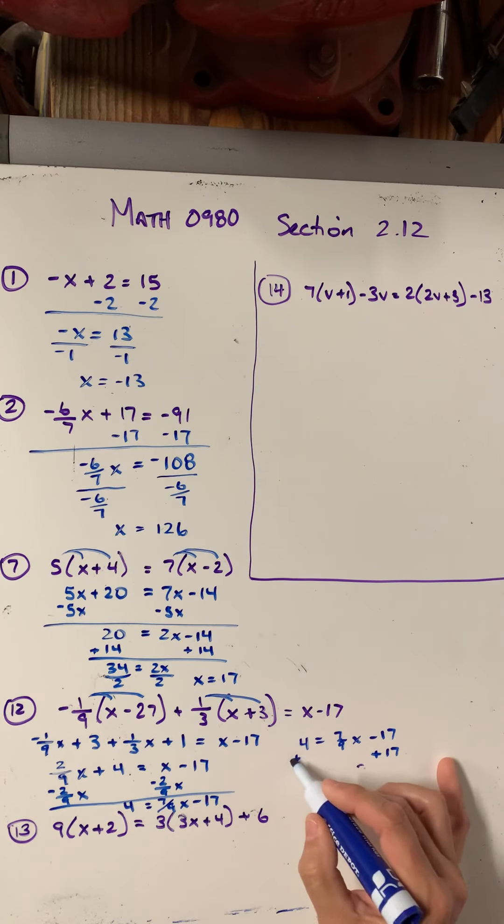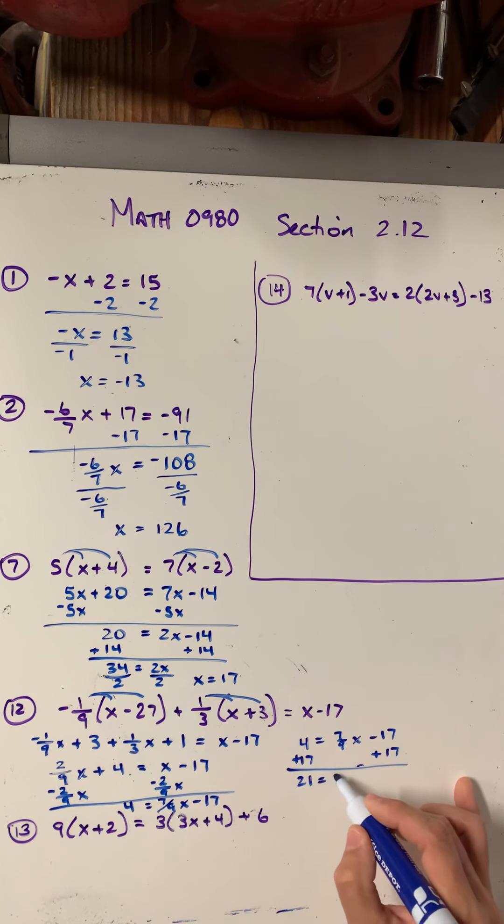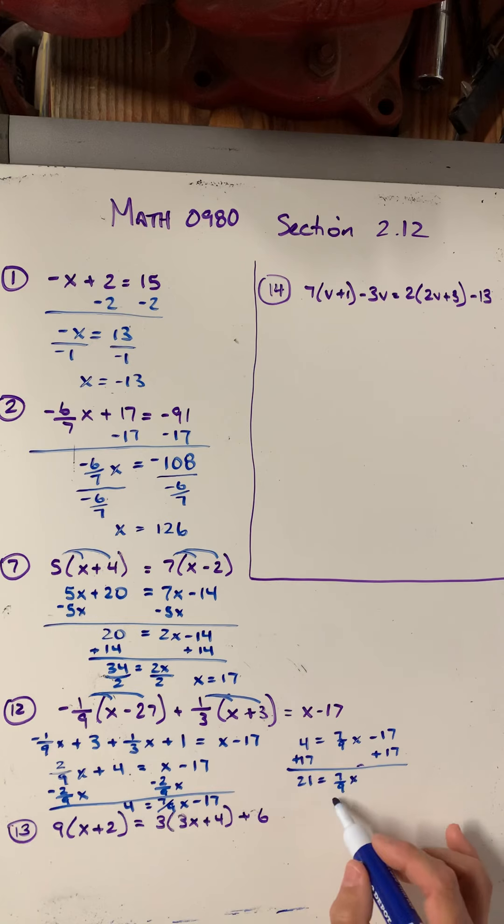So 4 equals 7 9th x minus 17. Plus 17 on both sides gives me 21 equals 7 9th x. Then if I divide both sides by 7 9th, I should get 27. So x equals 27.